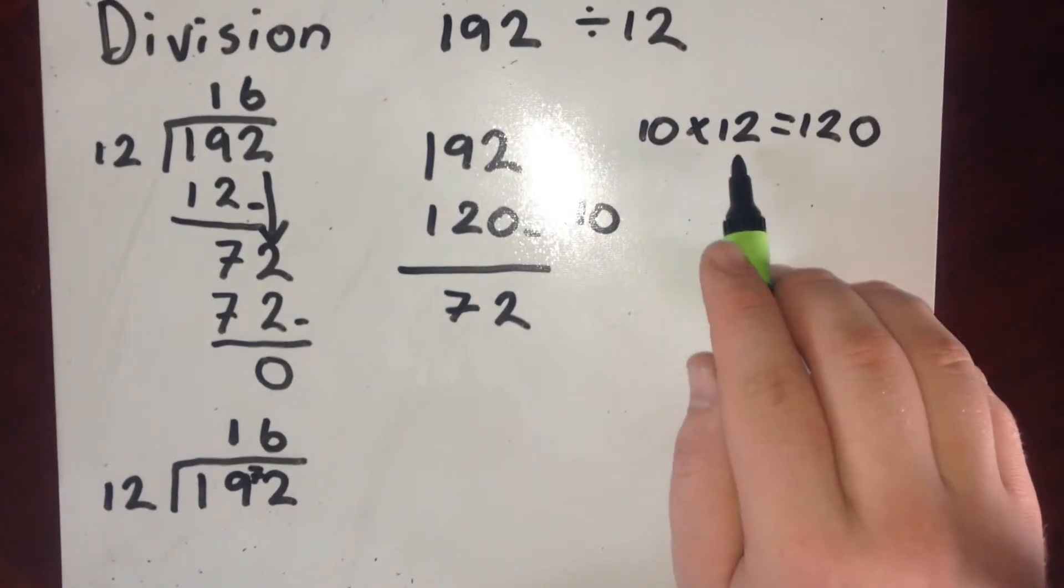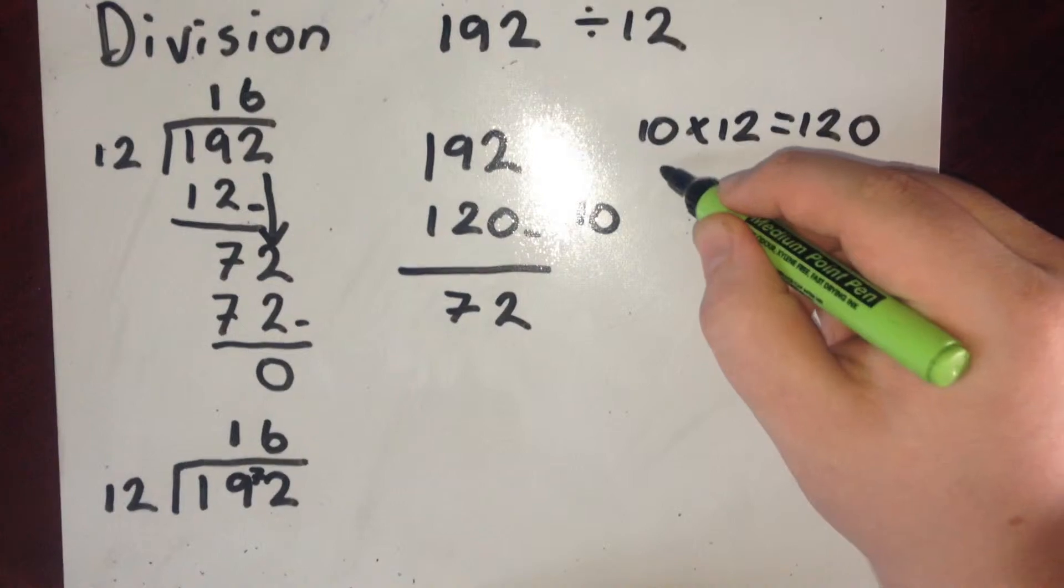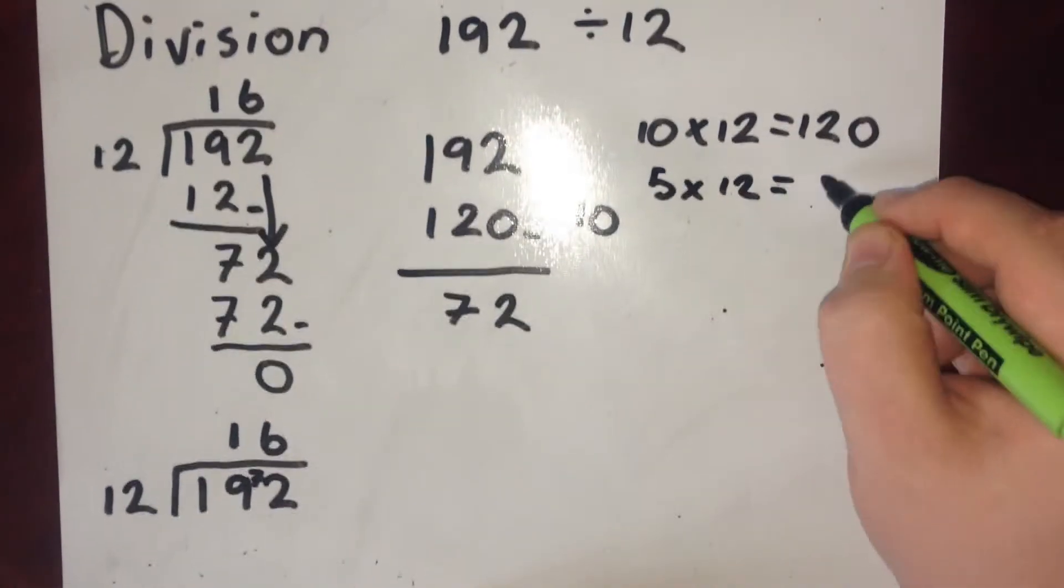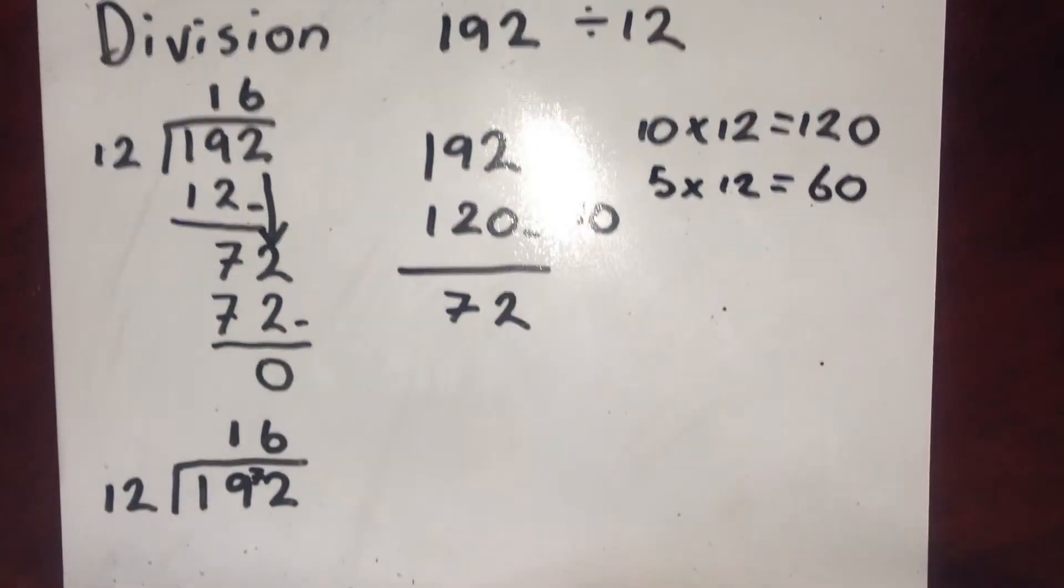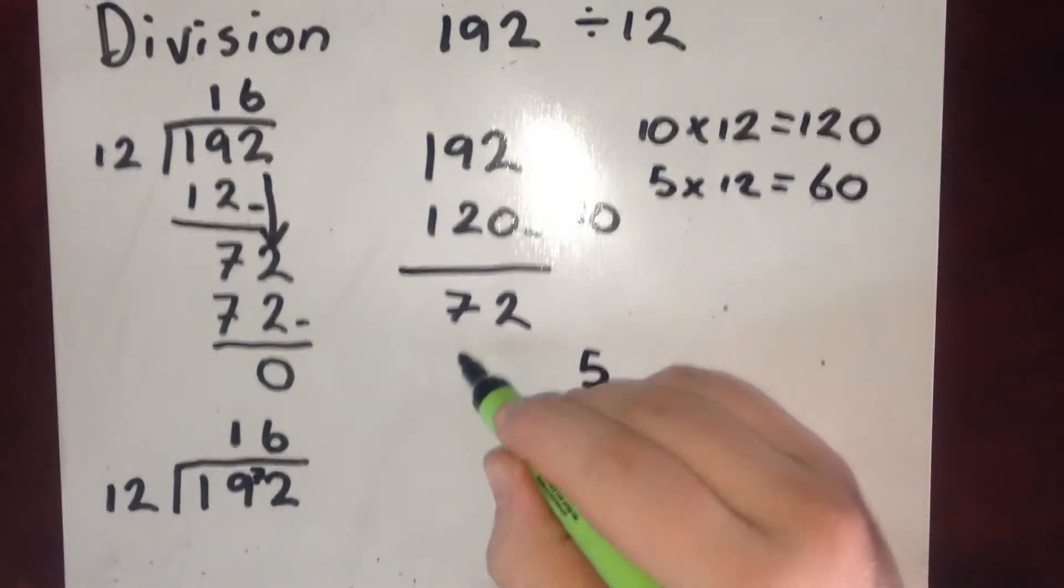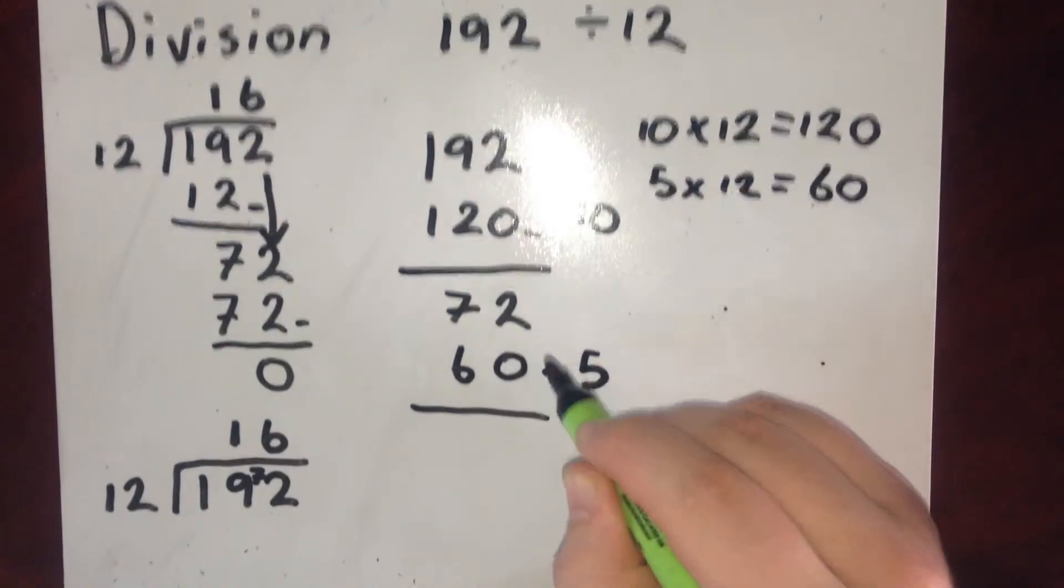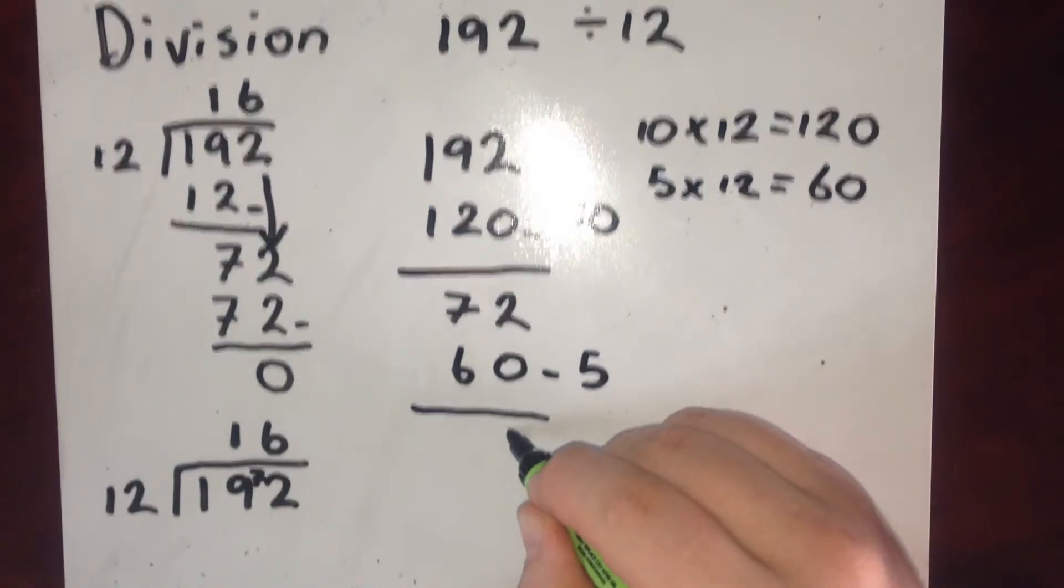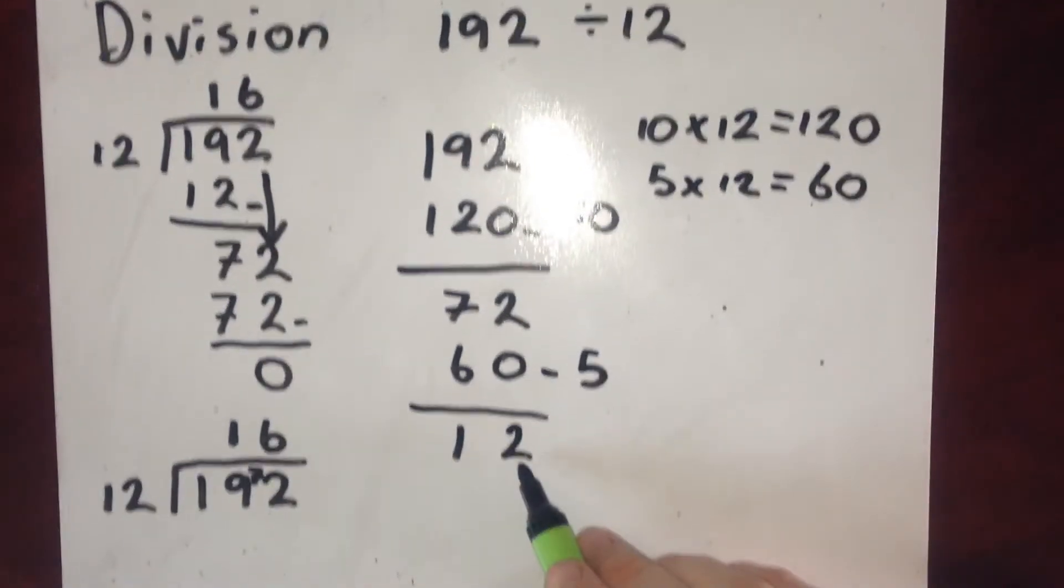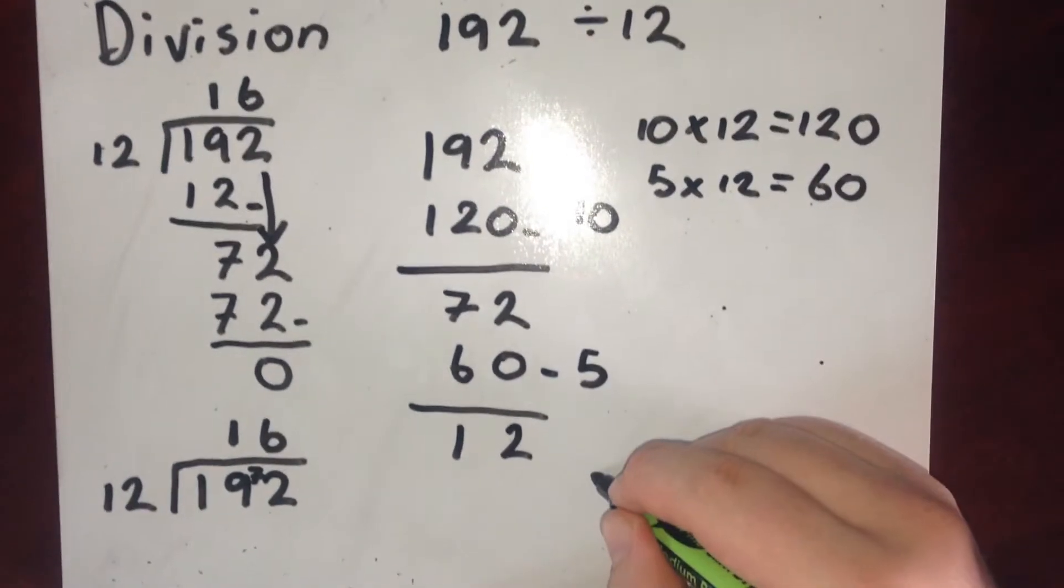If I know 10 lots of 12 is 120, I might halve that. So 5 lots of 12 is just going to be half of it. So that's 60. So I could take a big chunk of 5 lots of 12 away. So that's 60. Take that away. That leaves 12. And 12 is just 1 lot of 12.